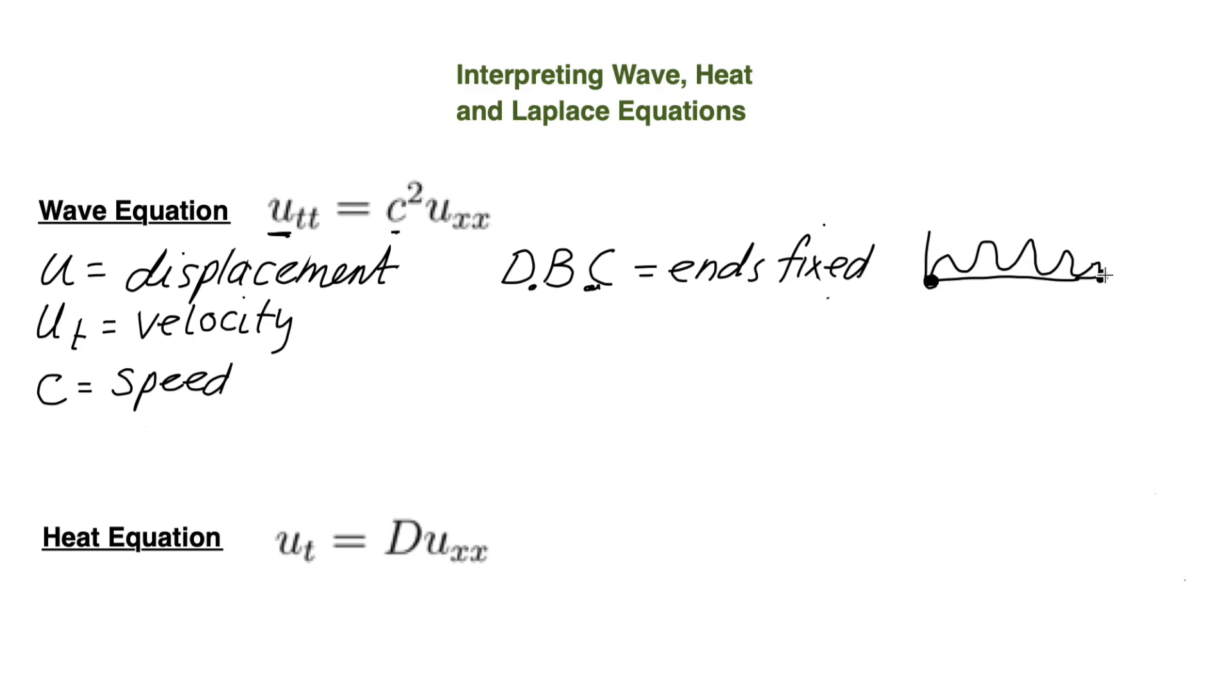And if it is a homogeneous boundary condition, they are fixed at zero. So you can also imagine two people holding a rope and the ends are fixed. So it just means they're both holding really tightly.